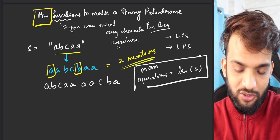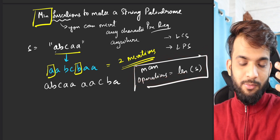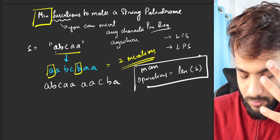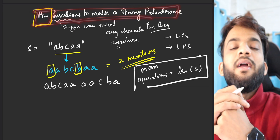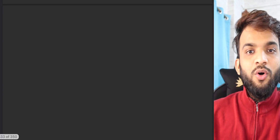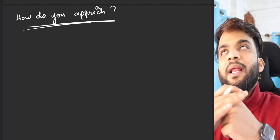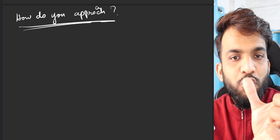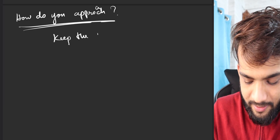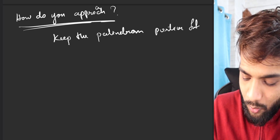The question asks: given any string, find the minimum number of operations. We know the maximum is string plus reverse of string, but we want the minimum. The key insight: if there is a portion in the string which is already a palindrome, keep it intact. Keep the palindromic portion intact — that's the first thing that comes to mind.